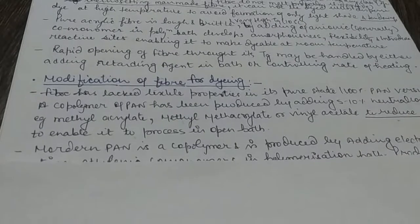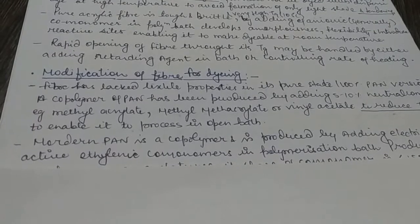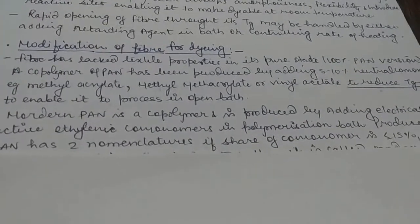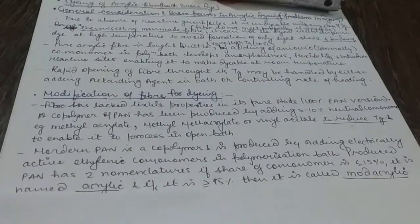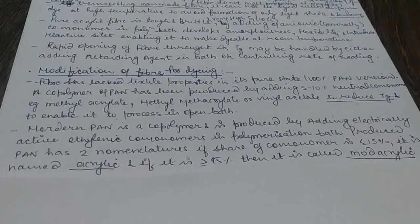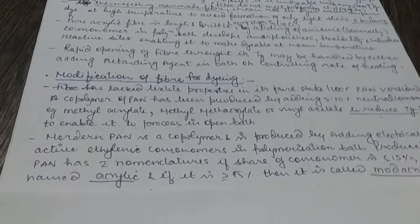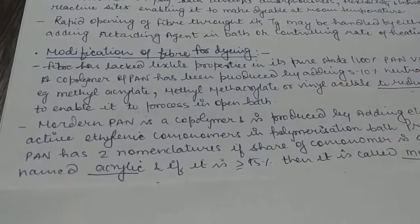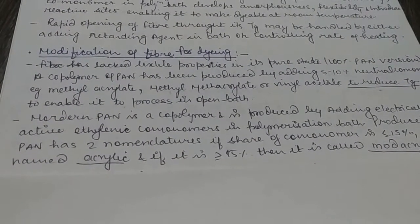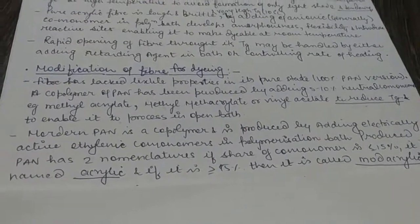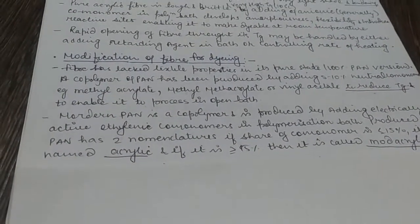Modern polyacrylonitrile is a co-polymer produced by adding electrically active ethylenic co-monomer in the polymerization bath. Polyacrylonitrile has two nomenclatures: if the share of co-monomer is less than 15%, it is named acrylic; if it is greater than 15%, it is called mod-acrylic. Based on the co-polymer concentration, if the co-polymer part is less than 15% it is acrylic fiber, and if it is more than 15% it is mod-acrylic.